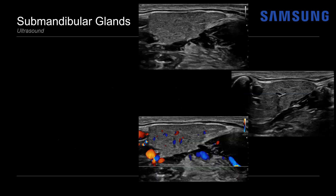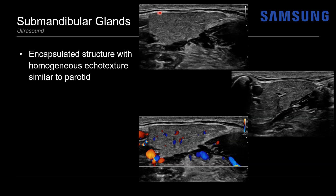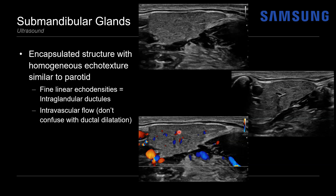On ultrasound, the submandibular glands will normally appear as encapsulated structures with homogeneous echotexture, similar to the parotid gland. There may be fine linear echodensities within these structures corresponding to intraglandular ductules, and it's normal to see some intravascular flow on color Doppler imaging. On grayscale imaging you may confuse these physiologic vessels with dilated ducts, but you can easily assess that by adding color Doppler — they should normally fill in.